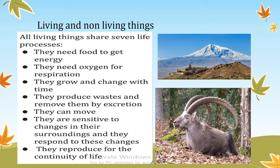There are 7 main processes which distinguish between living and non-living things. Living things have these 7 processes: they need food to get energy, they need oxygen for respiration, they grow and change in size, they produce waste and remove it by excretion, they can move, they are sensitive to their surroundings and respond to changes, and they reproduce for the continuity of their generation.